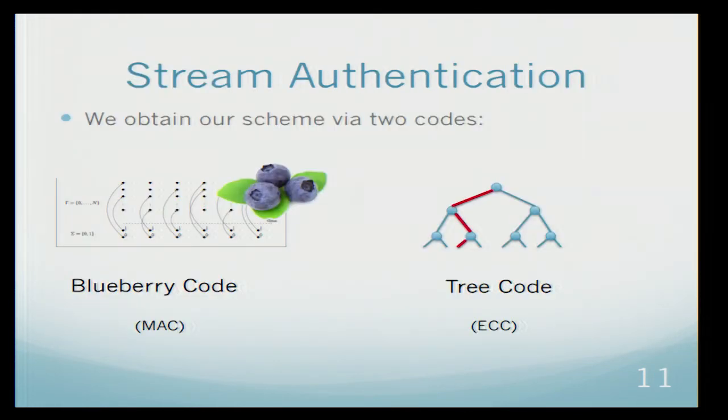How do we get this scheme? We do it by combining two codes. One code, we call it the blueberry code. This is a weak MAC, weak message authentication code. The other one we call the tree code. This is a code that will deal with the errors. It's an error correction code. Now let me just explain each one of them and what do they do.